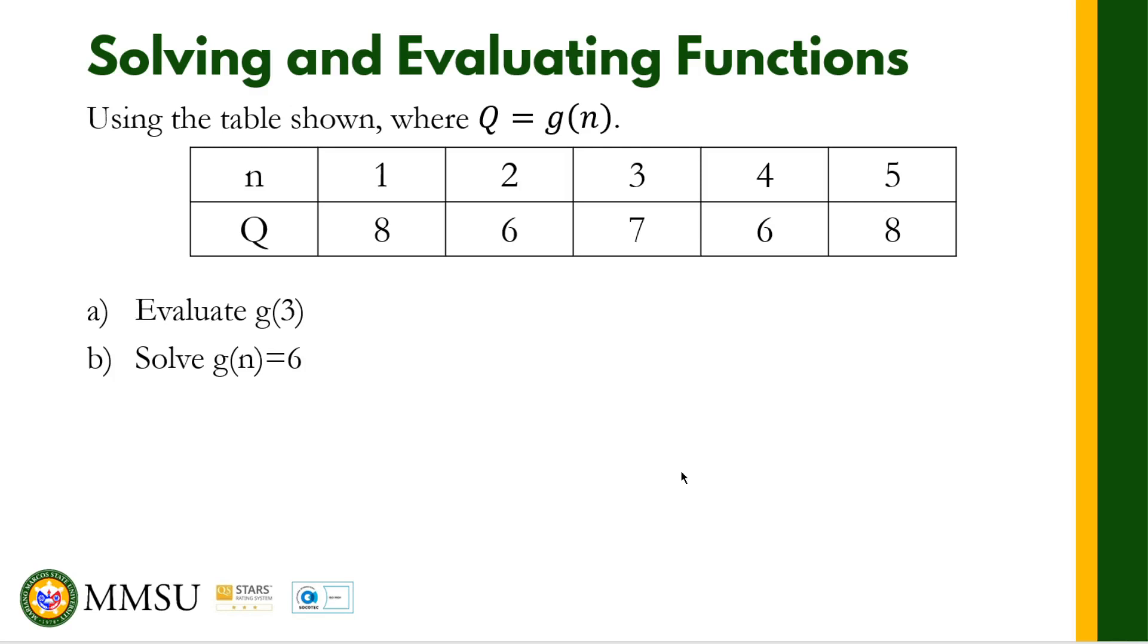If we look at letter A, evaluate means what is the output value when the input value is 3? So for letter A, based from the table, G of 3 is equal to - look at the table, the input is 3, the output is 7. So G of 3 is equal to 7.